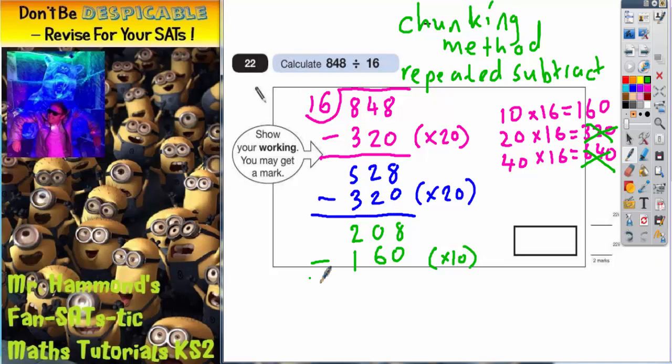So let's work out what this gives us. 8 take away 0 is 8, 0 take away 6 we can't do, so we need to borrow one. 10 take away 6 is 4, and 1 take away 1 is nothing. So we're now down to 48.